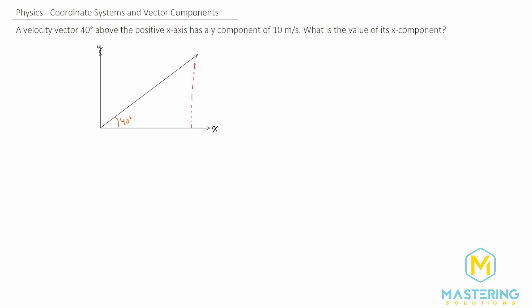So the y-component is 10 meters per second and we need to figure out what is the x-component. So the x-component is this portion. I drew it above just so you can see, it's obviously the same if we draw it down here, but you can see that we just created a right triangle.